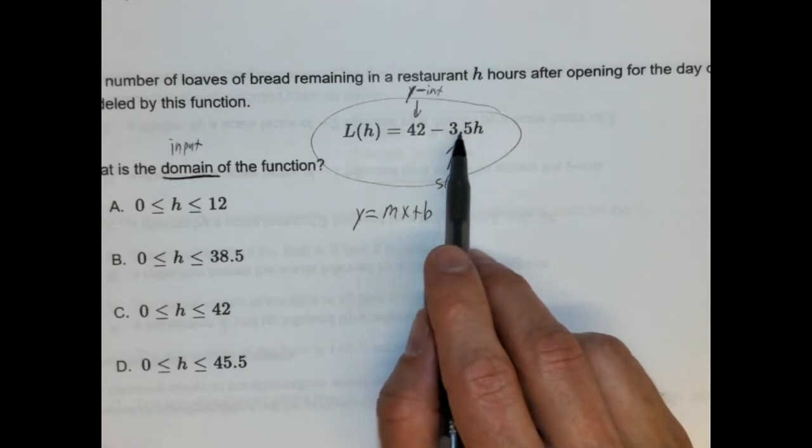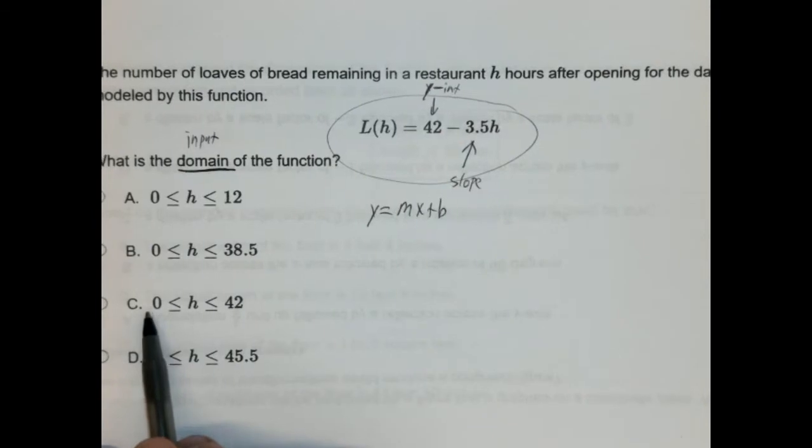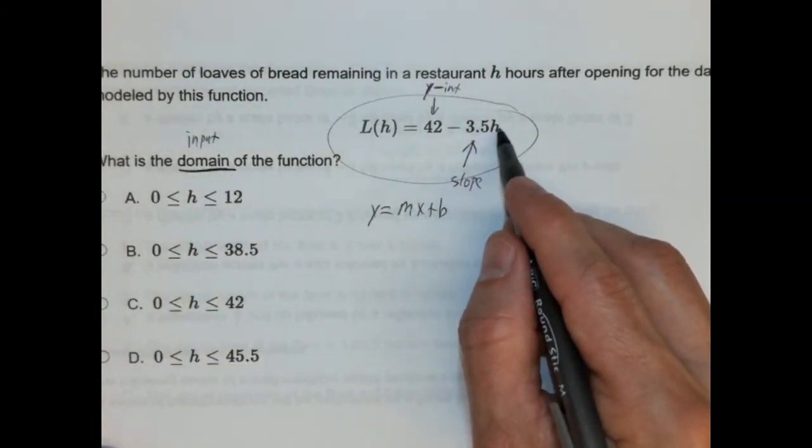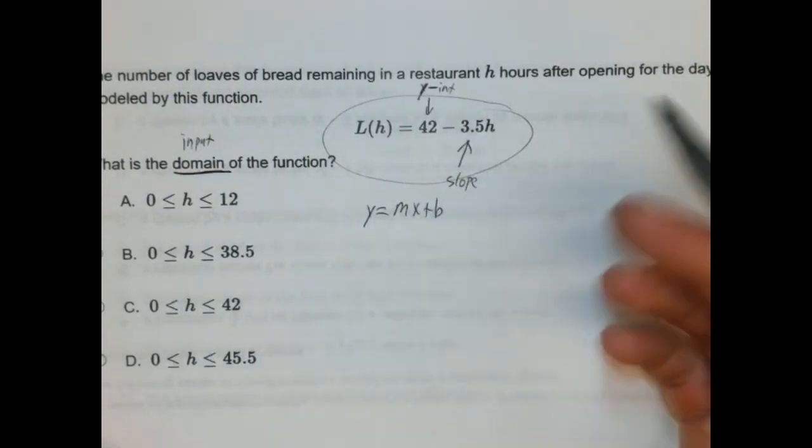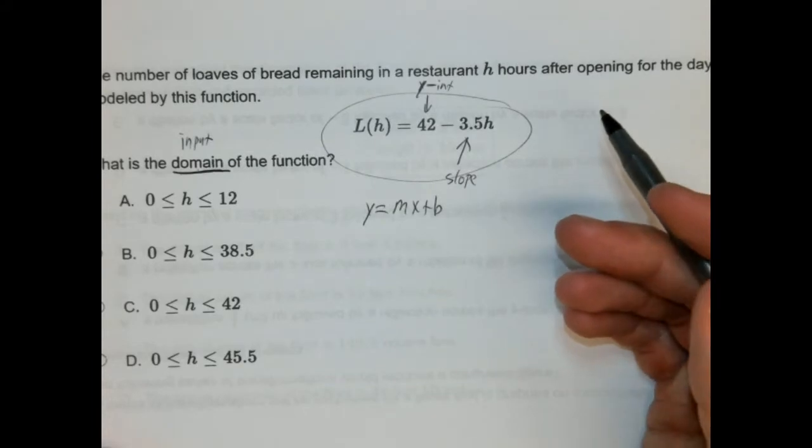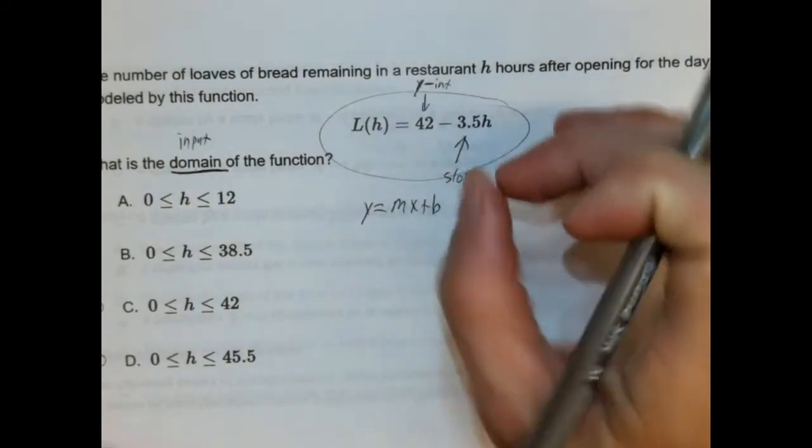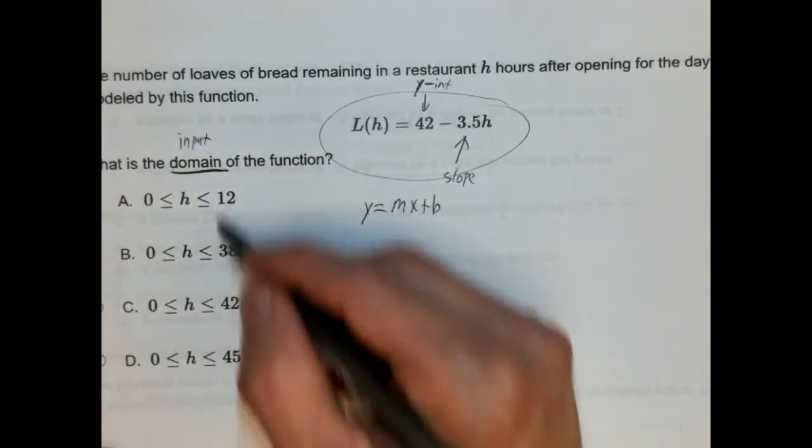So we know for every H hour, right? This is H, our values going down by three and a half. This looks awfully like a rate of change, doesn't it? Here's our slope and here's our Y intercept actually. It's just written in reverse. We're used to it being written like this, right? Slope intercept form. They just kind of reversed it. So we're starting with this much bread. We're starting with 42 loaves and we're losing three and a half loaves per hour.